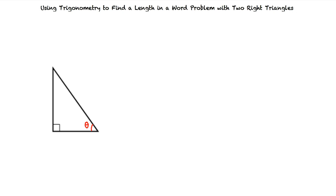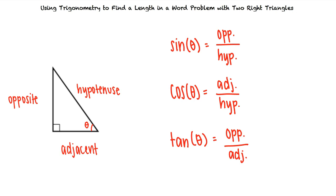Say we have a right triangle with angle theta. We know that sine of theta equals the length of the opposite side over the length of the hypotenuse, cosine theta equals the length of the adjacent side over the length of the hypotenuse, and tangent theta equals the length of the opposite side over the length of the adjacent side. We will need to know these identities in order to solve word problems.